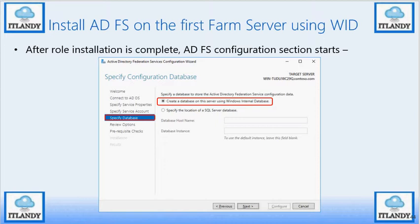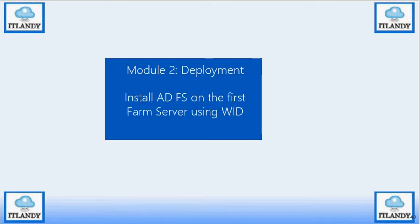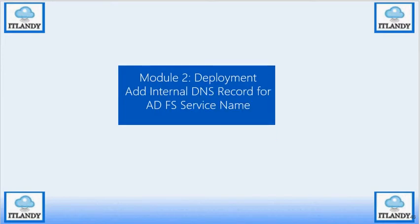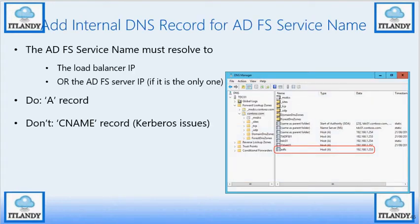This is the fastest and simplest deployment of an ADFS farm using Windows Internal Database. DNS is really important. Internal users need to resolve to the VIP of the internal farm, and external users need to go to the web proxy. The ADFS name must resolve to the IP of the load balancer or the ADFS itself if single machine. Use an A record — do not use a CNAME, as CNAME will create a cascade of issues.